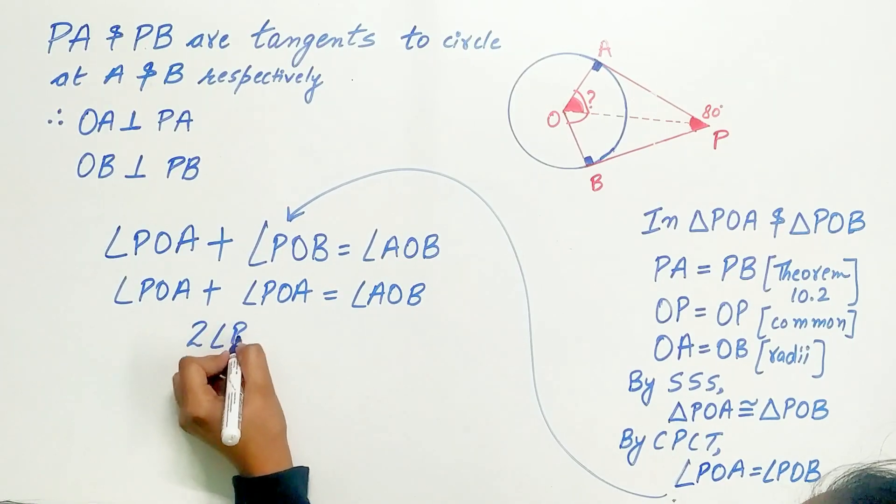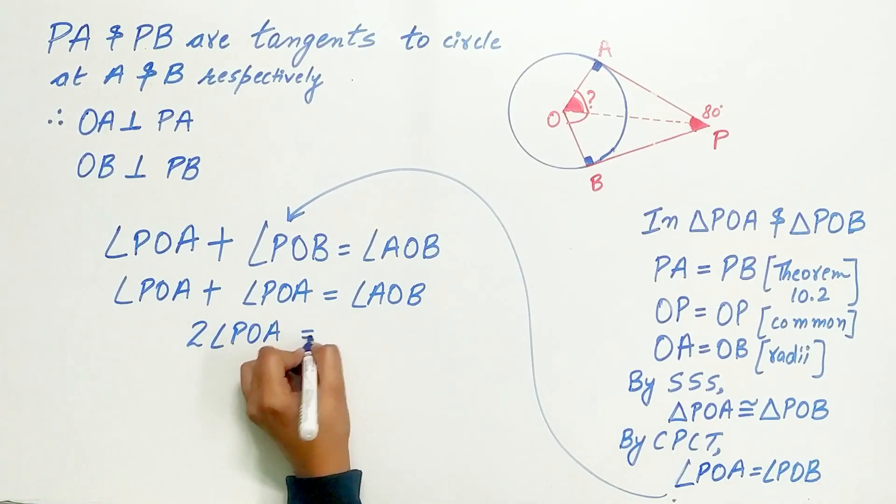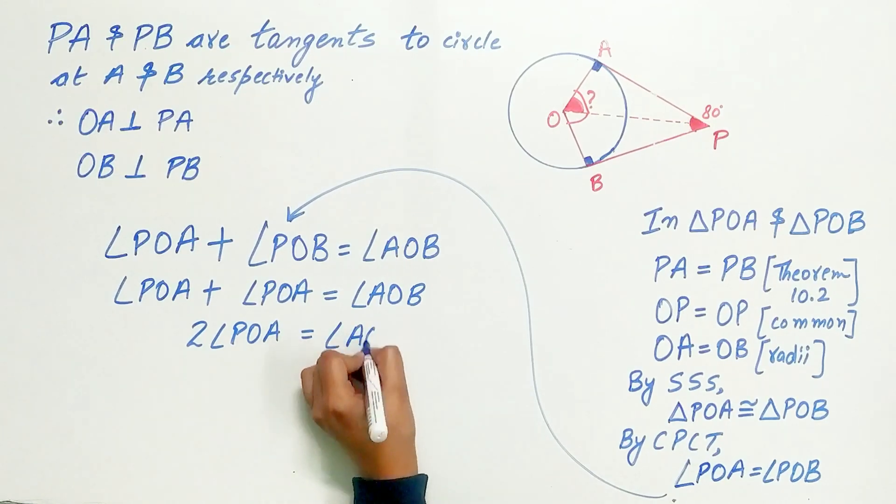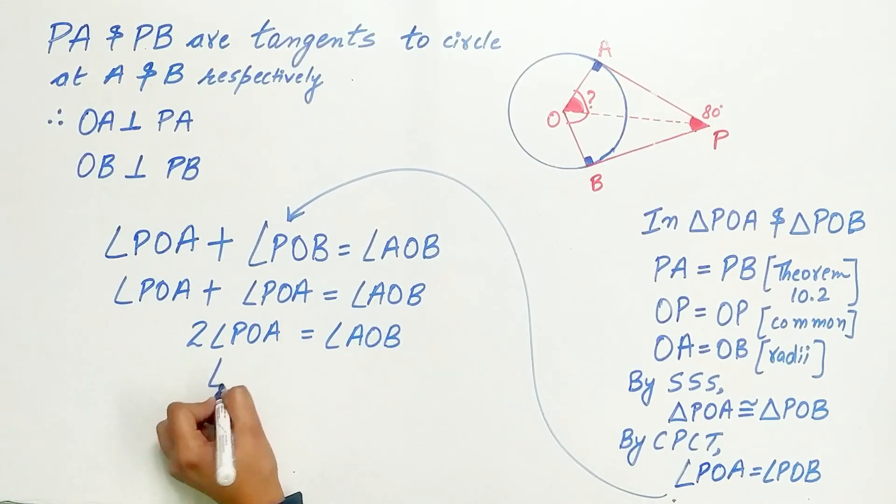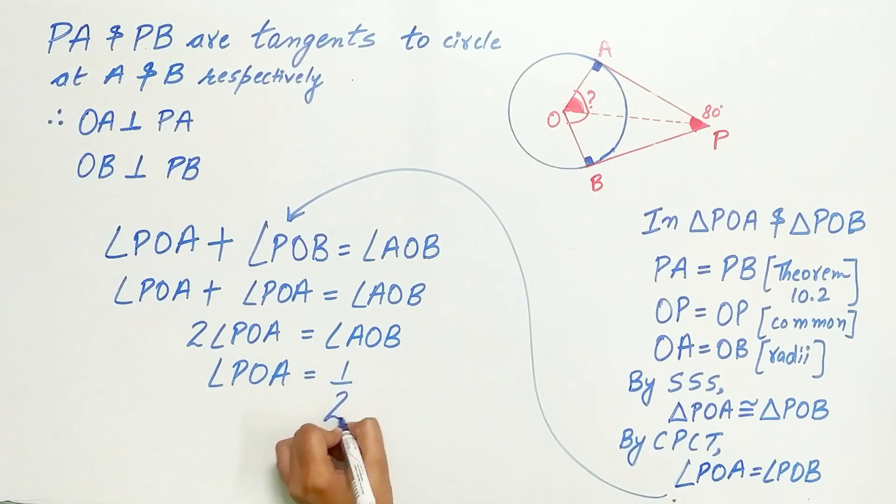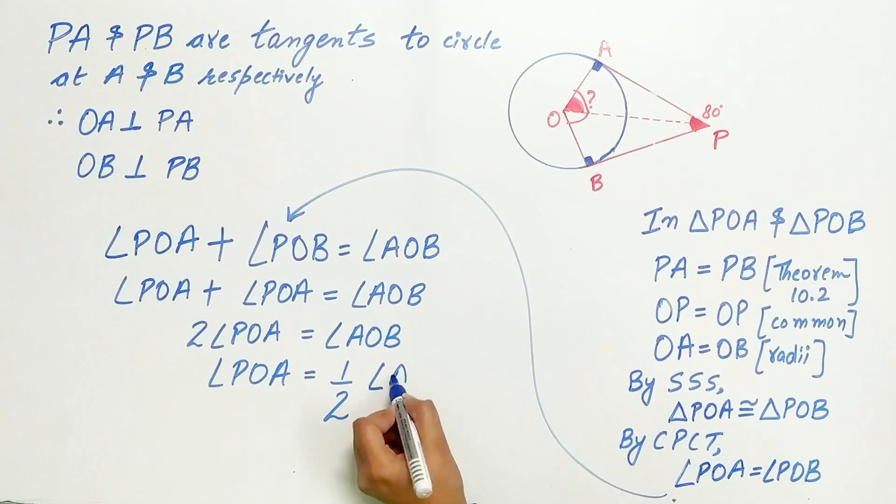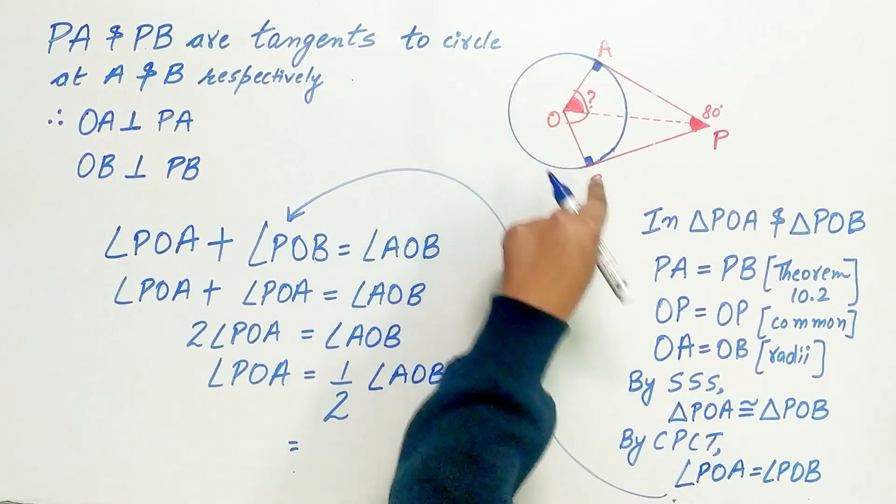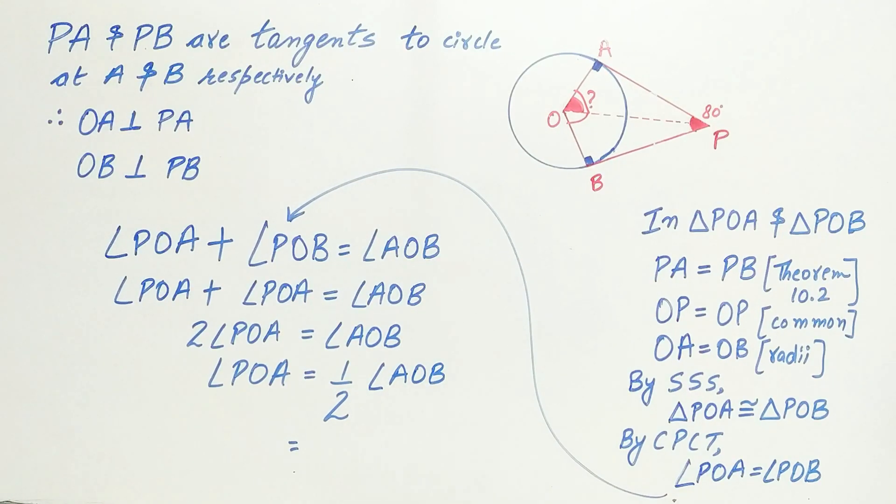2 times angle POA is equal to angle AOB. Angle POA is equal to 1 by 2 multiply angle AOB. Angle AOB is 100 degree exactly. 1 by 2 multiply 100 degree is 50 degree.